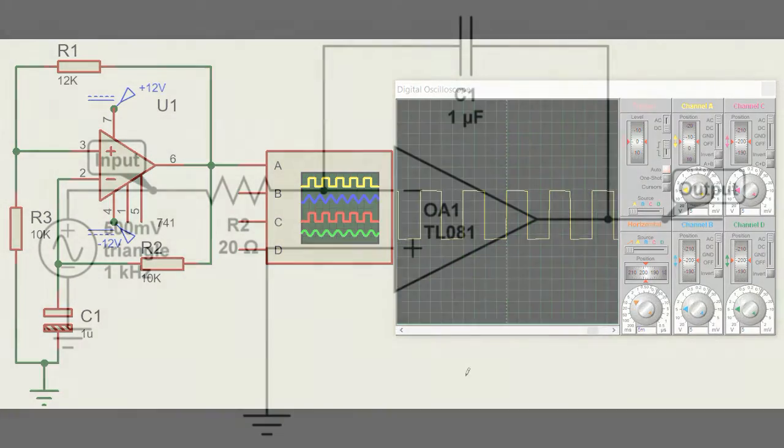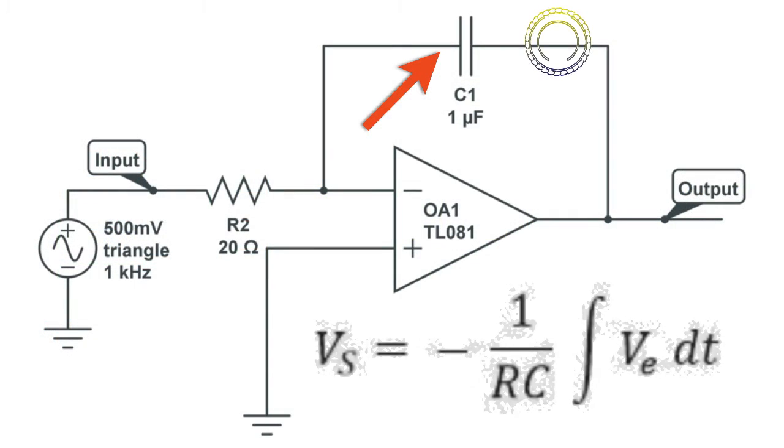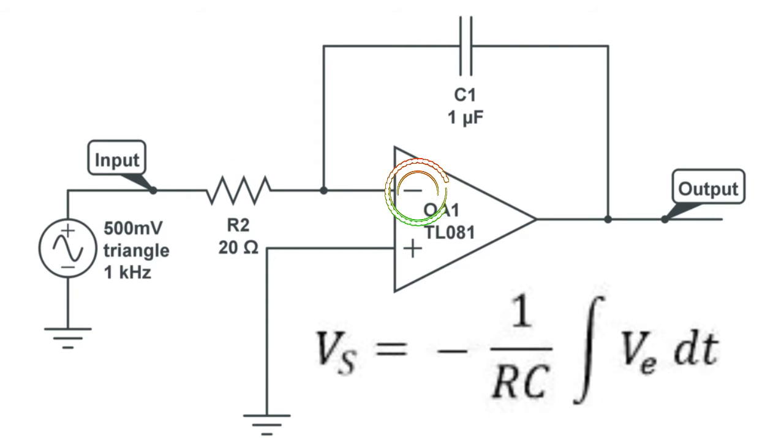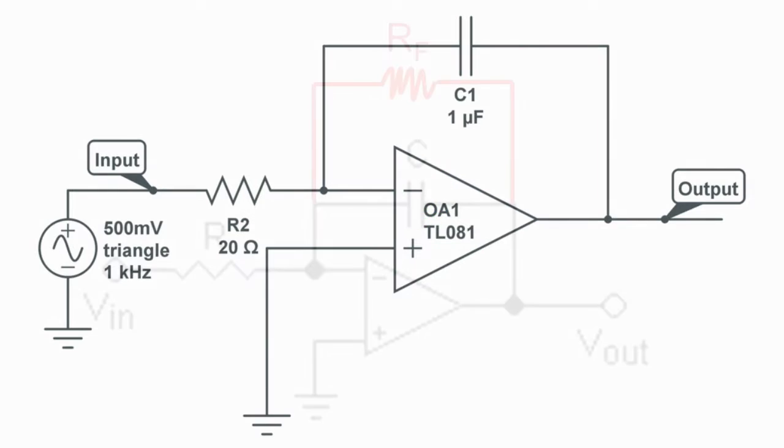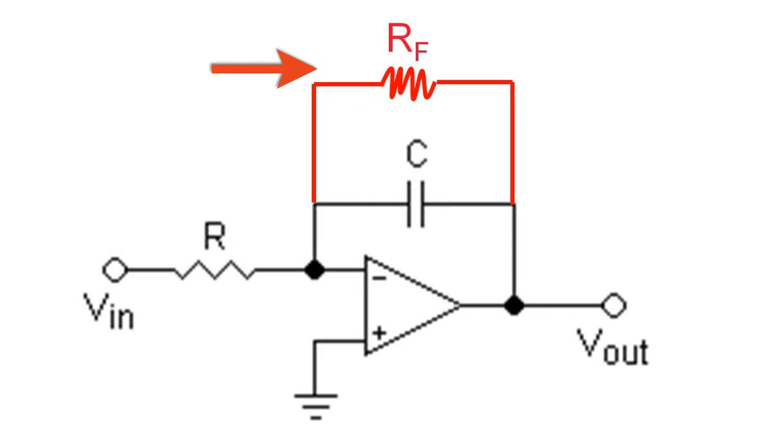With an operational amplifier, a capacitor in the inverting feedback path, and a resistor at the inverting base of the input as shown, the input signal is integrated.